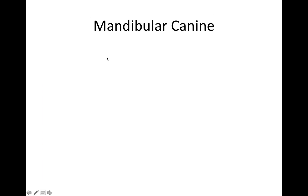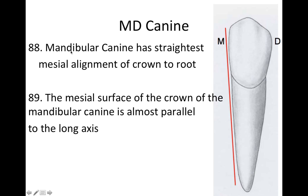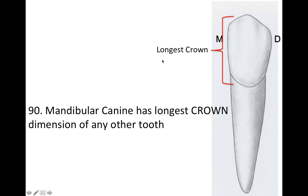Moving on to the mandibular canine: the mandibular canine has the straightest mesial alignment of crown to root — going from crown to root, you can see it's nice and straight. The mesial surface of the crown of the mandibular canine is almost parallel to the long axis of the tooth. The mandibular canine also has the longest crown dimension of any other tooth — definitely need to know that.